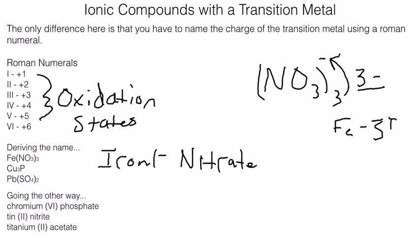If iron is at a three plus charge, we would just write in the Roman numeral three. One, two, three nitrate. So this would be iron three nitrate.